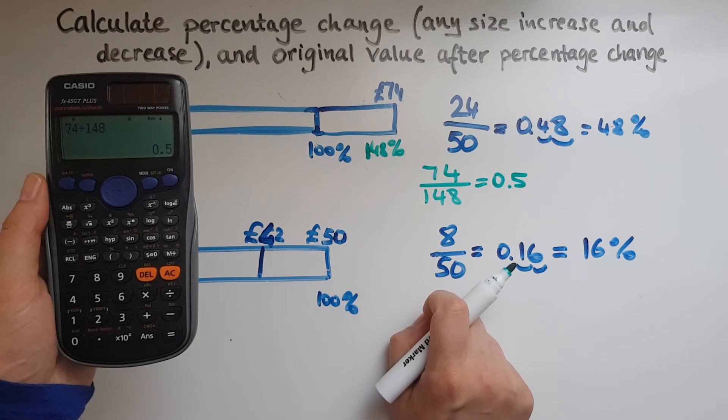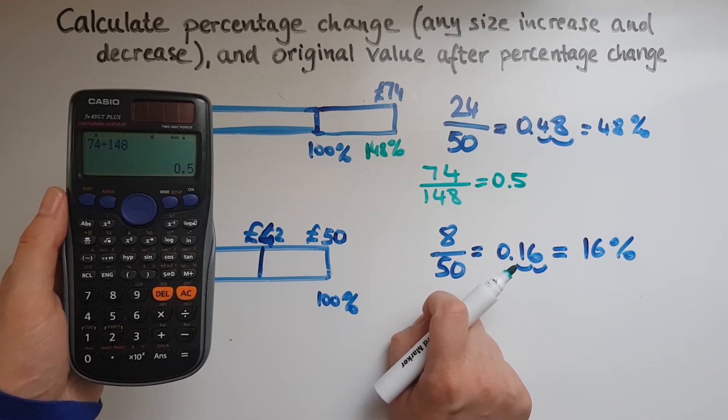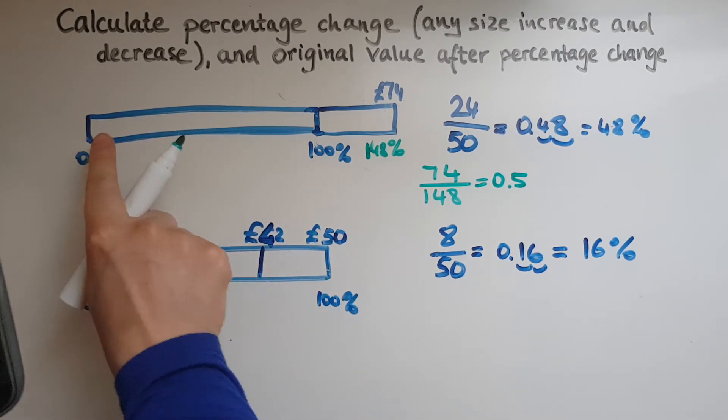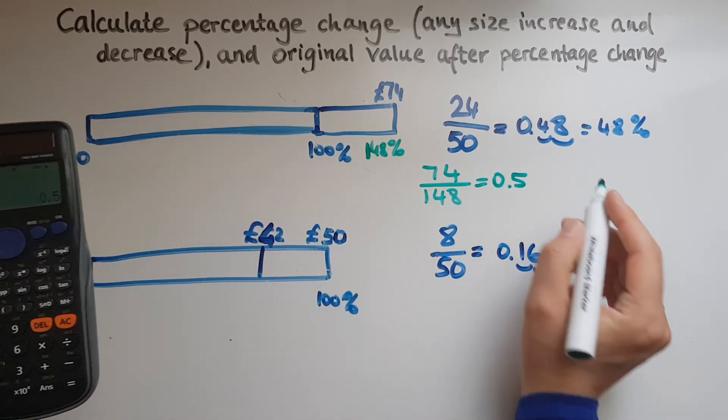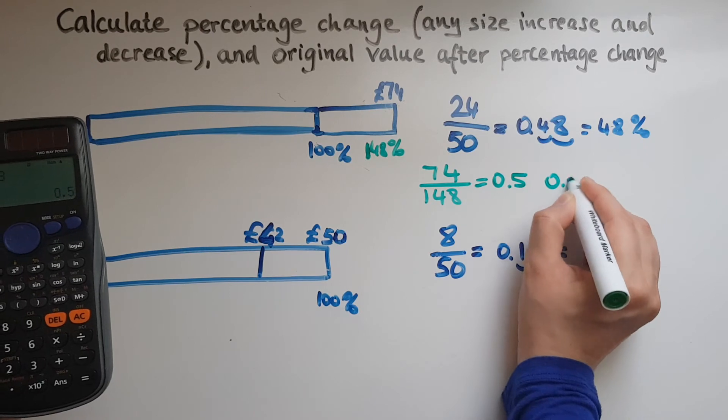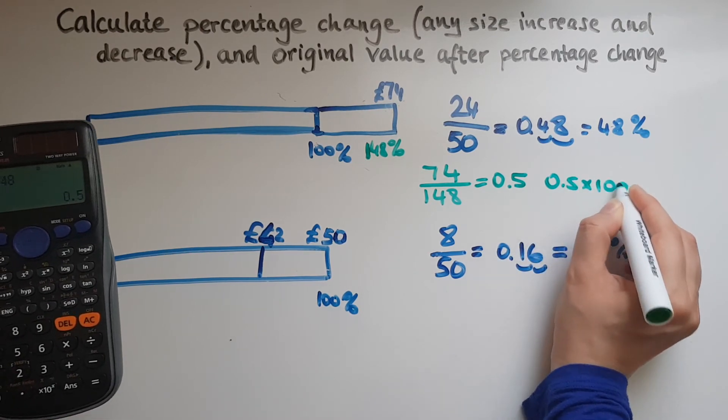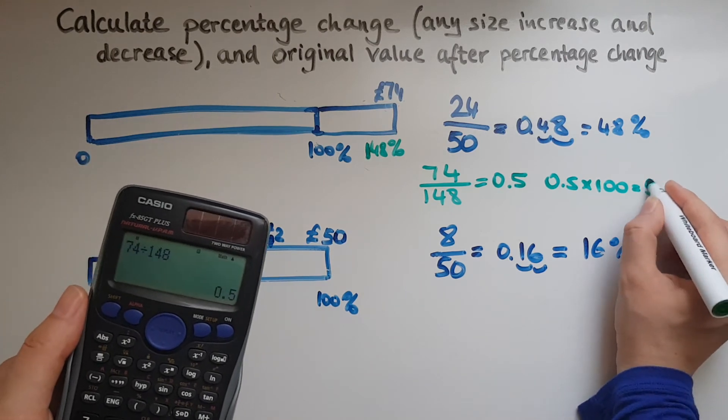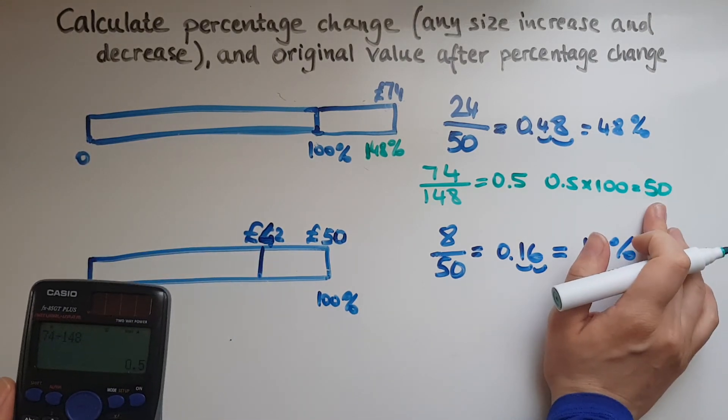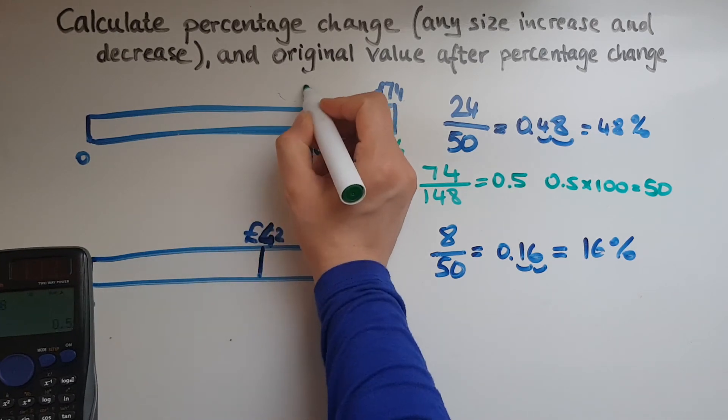So 1% is 50 pence in other words. Now I've got 1% but what am I interested in? I'm interested in 100%. So then I'm going to multiply 0.5 by 100, which gives me 50.